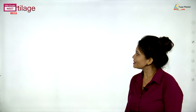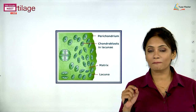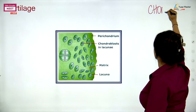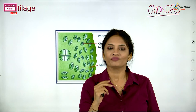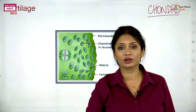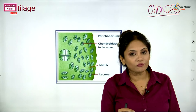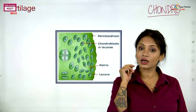When we talk about the structure of cartilage, remember one basic word: chondro. Wherever you have the word chondro, it is going to be related to cartilage — the same way that cardiac relates to the heart or nervous relates to the brain. When I say chondro, it is talking about cartilage.